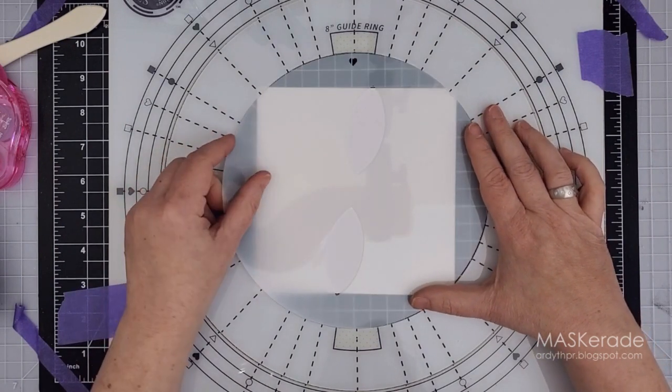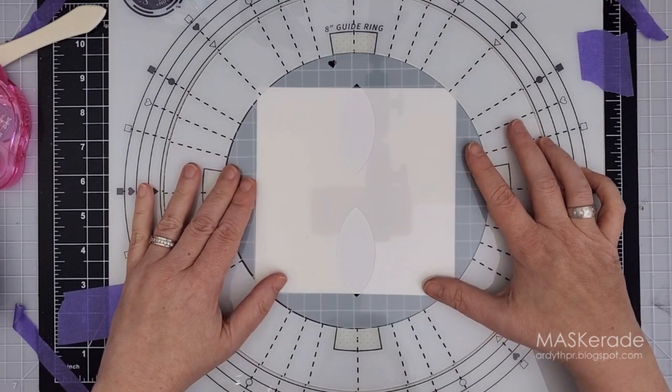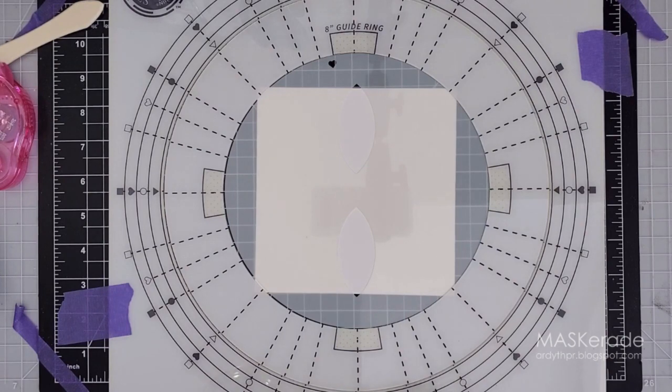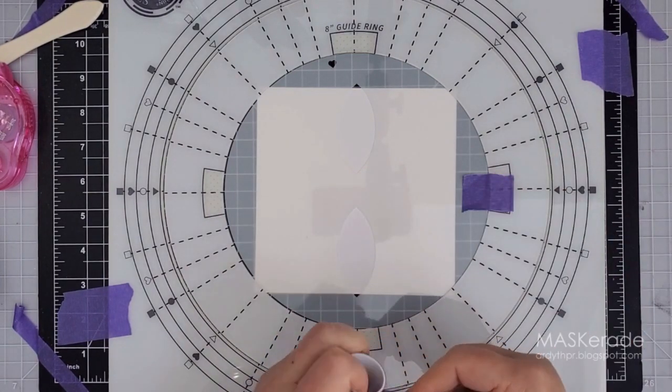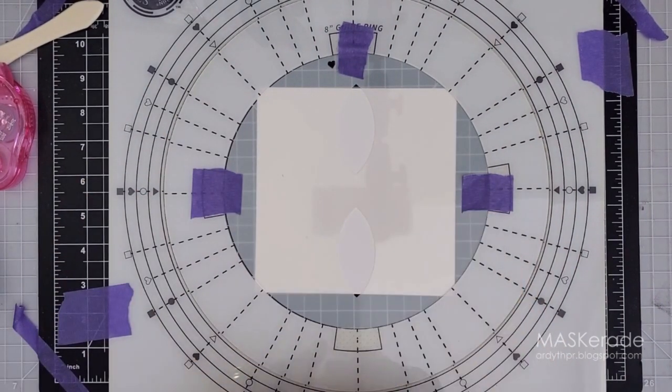Now I'm using the eight inch stencil guide and the larger stencil from the Sacred Lotus set. I taped the stencil to the guide so that it can all turn as one piece, and this time I decided since the arrow was slightly off center and I wanted my petal right in the center at the top, I'm going to use the tip of the petal as my guide for placing the stencil.